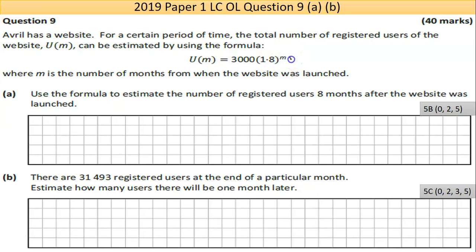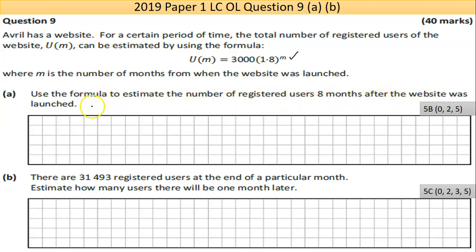It's a strange formula with a power, which is kind of off-putting. But remember, like anything else, if you know what the value is you can just substitute it in brackets and use your calculator, so it shouldn't be that scary. We're told that M is the number of months from when the website was launched - registered users go up by this power. Part A says: use the formula to estimate the number of registered users eight months after the website was launched.